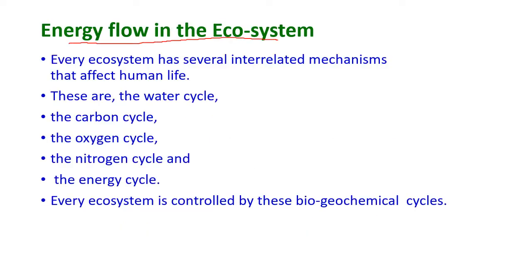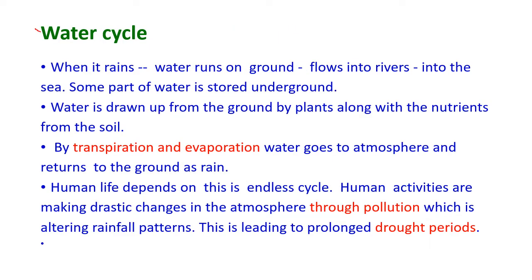Every ecosystem has several interrelated mechanisms that affect human life. These are the water cycle, the carbon cycle, the oxygen cycle, the hydrogen cycle, and the energy cycle. Every ecosystem is controlled by these biogeochemical cycles.